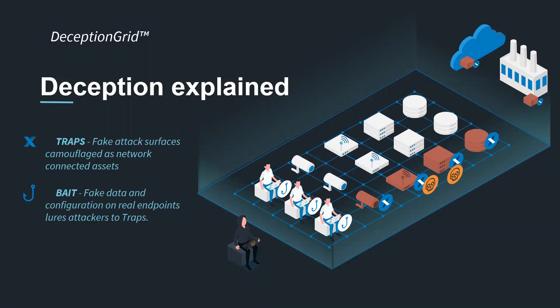Another element used by our deception grid system is baits, or tokens. These are fake data and configuration on real endpoints, that lure attackers to the traps. Tokens are textual-based elements, agentless and non-intrusive. They can look like network shares, RDP tokens, or false browsing history, leading to traps already deployed in the network.